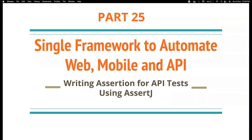Hi friends, welcome back to my channel Testing Minibytes. In this video we are going to see how we can write good assertions for our API tests. In API testing we normally have to assert a lot of things in the response, for example response status code, response cookies, maybe response headers or something in the response body itself, or sometimes the schema. There are different components that we have to validate in a response, so how can we do this in a much better way using AssertJ? If you use TestNG or JUnit, the code might not look as readable as when you do it in AssertJ.